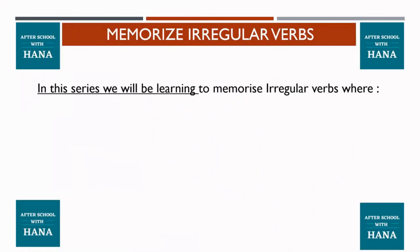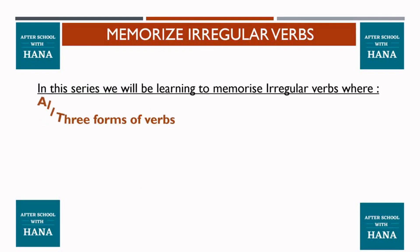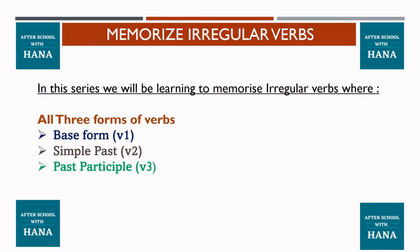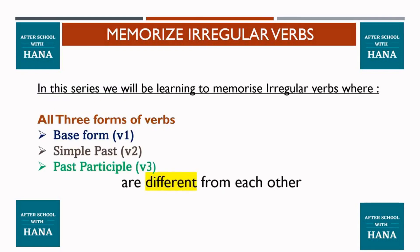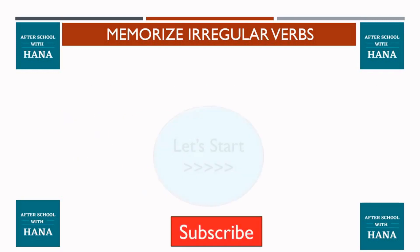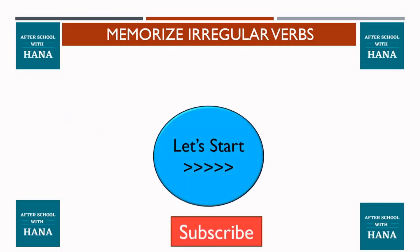In this series, we will be learning to memorize irregular verbs where all three forms of verbs — base form, simple past, past participle — are different from each other. Let's start.